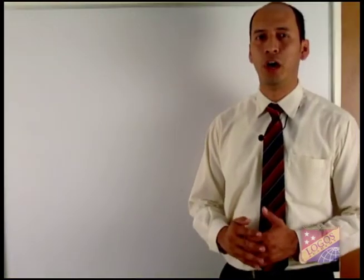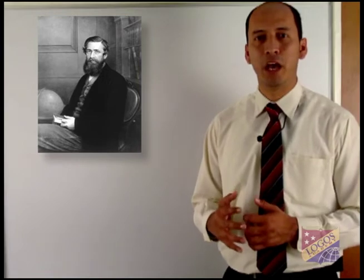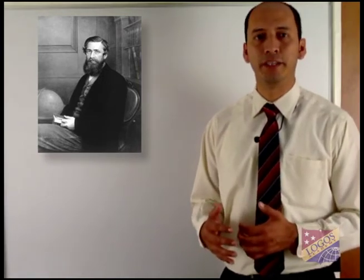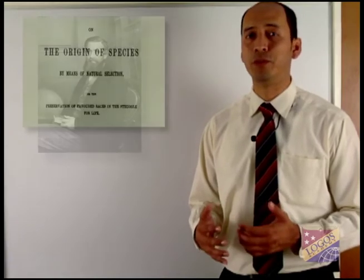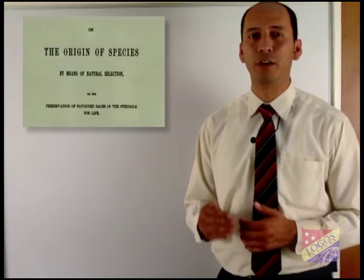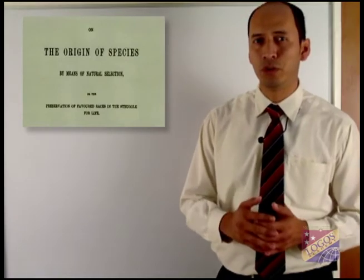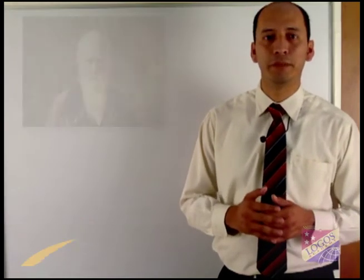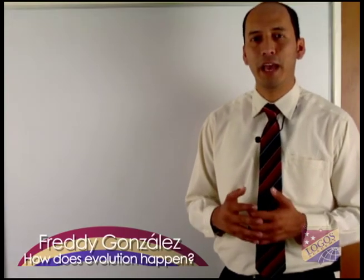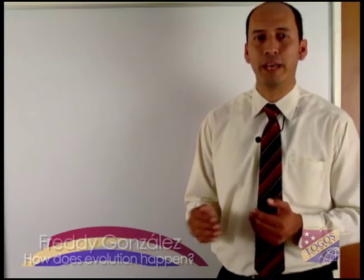After his voyage on the HMS Beagle, Darwin privately struggled with his ideas for about 20 years. Then, in 1858, Darwin received a letter from a fellow naturalist named Alfred Russell Wallace. Wallace had arrived at the same ideas about evolution that Darwin had. In 1859, Darwin published a famous book called On the Origin of Species by Means of Natural Selection. In his book, Darwin proposed the theory that evolution happens through natural selection — the process by which organisms that are better adapted to their environment survive and reproduce more successfully than less well-adapted organisms do.